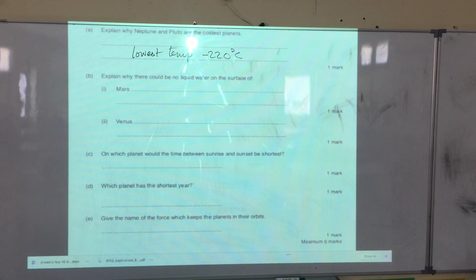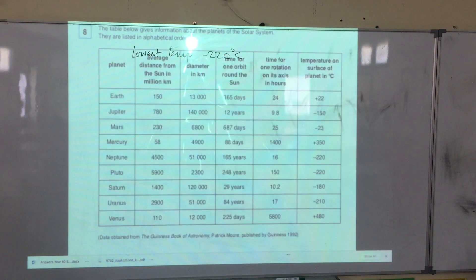The next question is: explain why there could be no liquid water on the surface of Mars. If you look at the surface of Mars, the temperature there is minus 23 degrees.